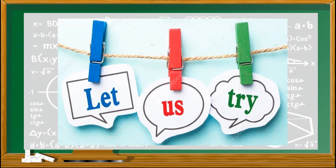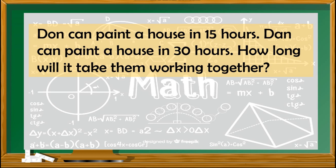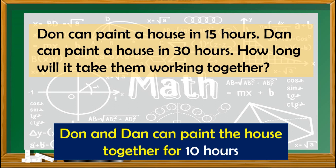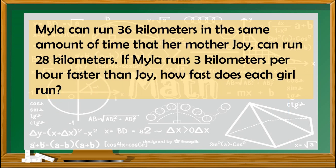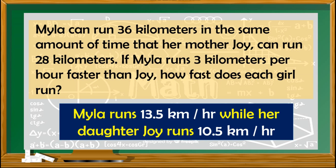After covering three problems on the applications of rational functions, please try the following practice items — you may pause the video. Let's check our work. For the work problem, Don and Don can paint the house together in 10 hours. For the next problem, Myla runs 13.5 kilometers per hour while her daughter Joy runs 10.5 kilometers per hour.